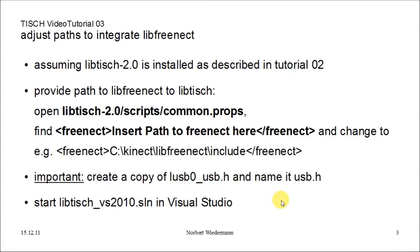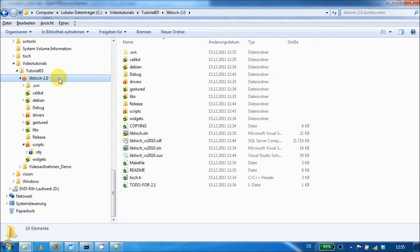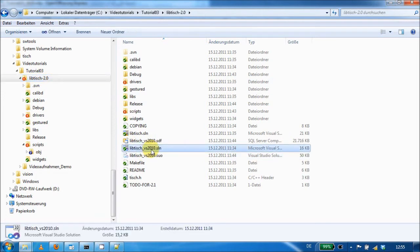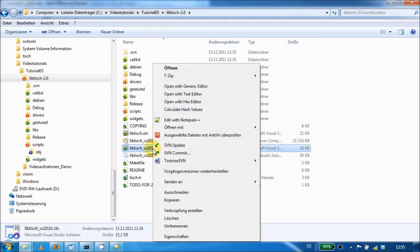Then you can go ahead and start the project file lib-tish-visualstudio-2010 in your Visual Studio. You find the project file in the LibTisch 2.0 folder, or just right-click and open it.